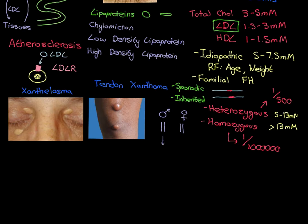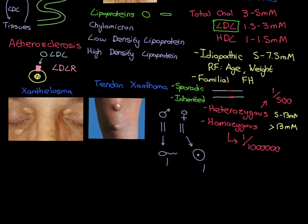Dad is going to create sperm cells - gametes are haploid, so one of the homologous chromosomes of each pair is going to be put into the nucleus of the gamete. In females, the germ cells create egg cells, which will also be haploid, so one copy of the LDL receptor gene will go into each gamete. When the germ cells create the gametes, they're going to have to copy the DNA. Mistakes can happen in the process of copying DNA, and that can introduce mutations potentially into the LDL receptor gene.